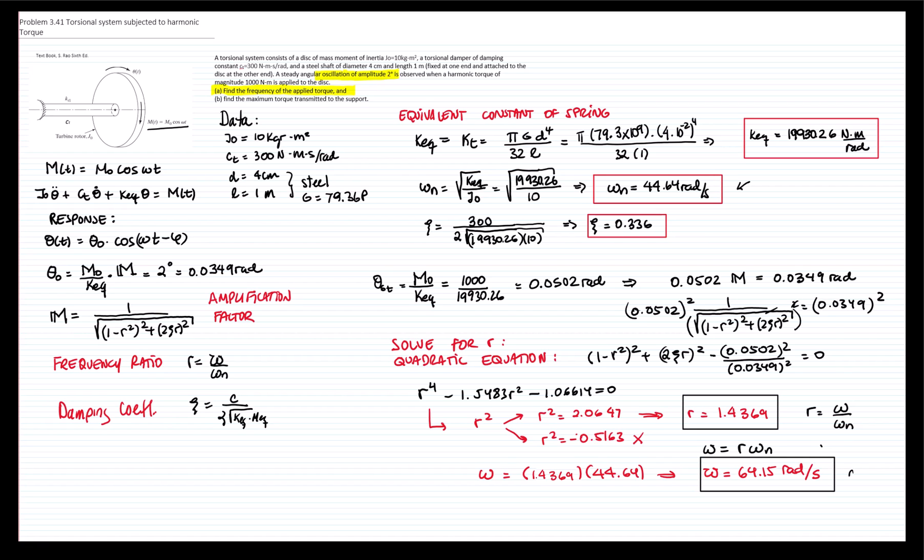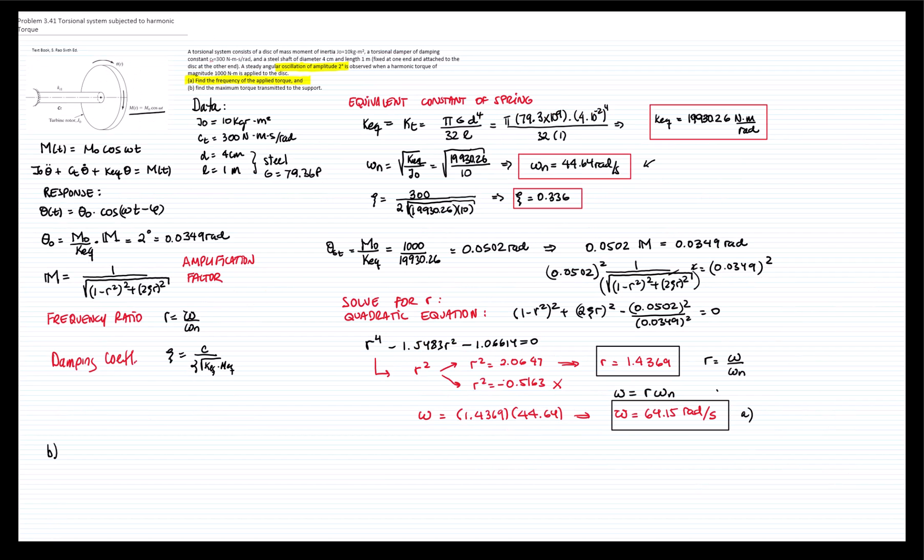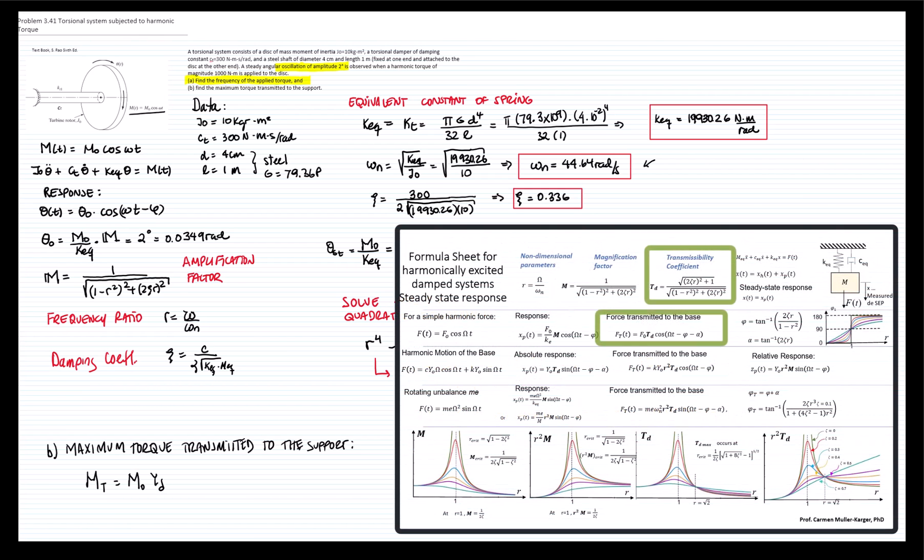This represents part A and part B is the maximum torque transmitted to the foundation. And for that, we will use the formula for the transmissibility factor. We recall that the transmissibility factor is defined as the square root of 1 plus 2 zeta r squared, over 1 minus r squared squared, plus 2 zeta r squared.